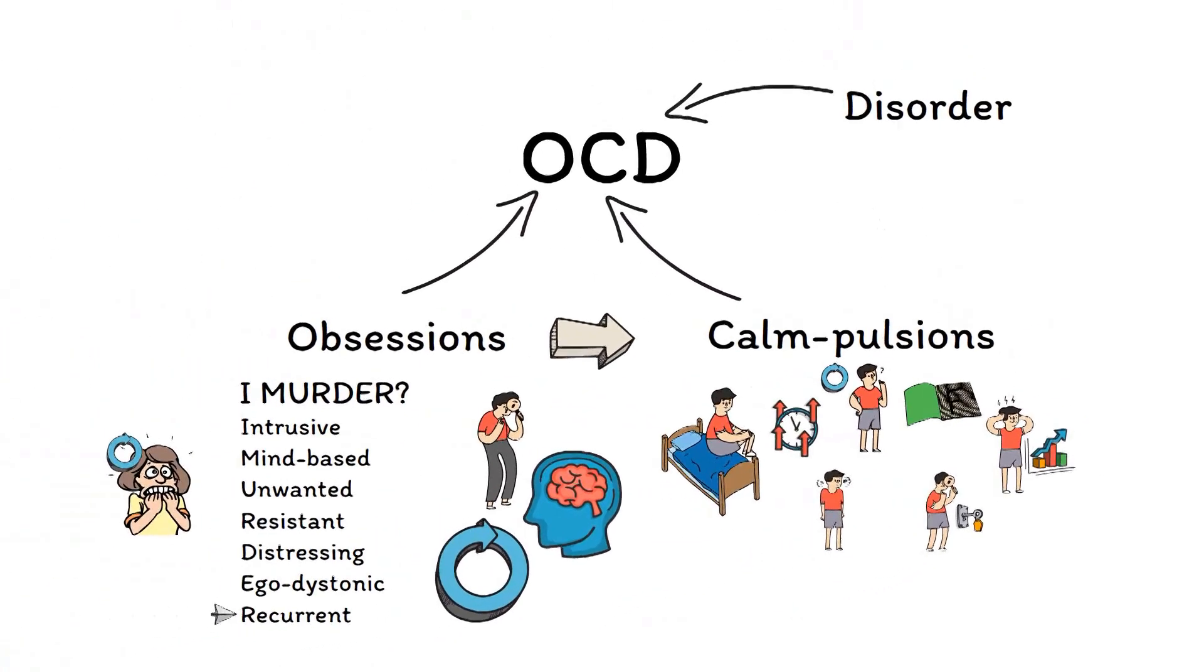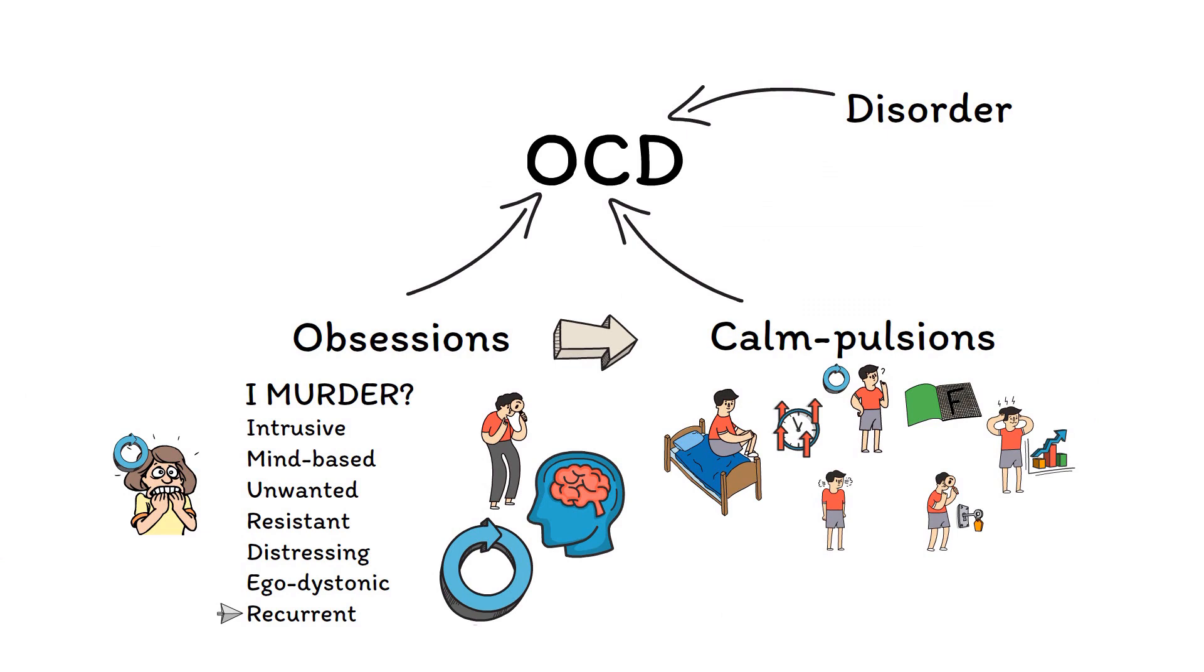As this example illustrates, compulsions work, but they don't work for very long. Instead, people with OCD find that the same obsessive thoughts just come back again, often at a higher intensity than before. This leads to further use of compulsions to neutralize these thoughts, creating a vicious cycle between the two.